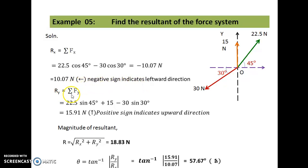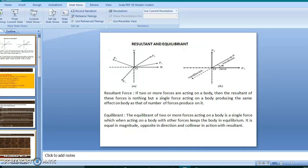Ry equal to sigma Fy equal to 22.5 sin 45 plus 15 minus 30 sin 30 equal to 15.91 Newton. Positive sign indicates upward direction. Magnitude of resultant R equal to root of Rx square plus Ry square equal to 18.83 Newton. Theta equal to tan inverse of Ry upon Rx equal to tan inverse of 15.91 by 10.07 equal to 57.67 degrees upward.